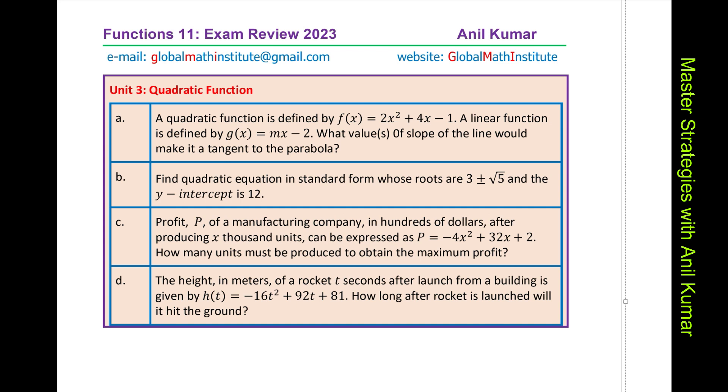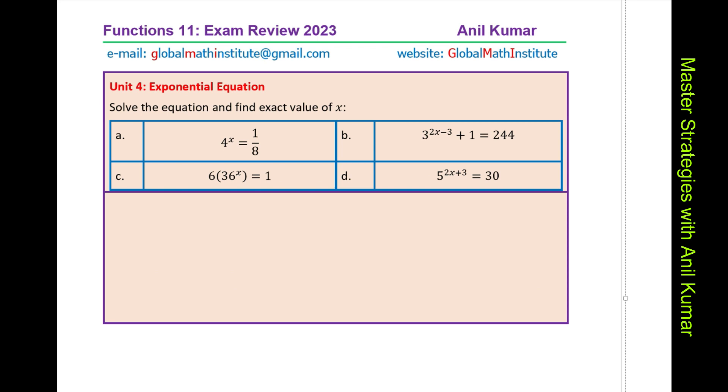Part b. Find the quadratic equation in standard form, whose roots are 3 plus minus square root 5, and the y-intercept is 12. There are many ways to do it. I will discuss with you one of the best ways to do. Remember, product and sum for standard equation. That is the method you should be applying. Question number c part and the d part are the application questions, where the application is given to you. Simple working with the quadratic equation, that should not be critical. However, you should understand the units and interpret them properly in your answer. So, that could be a catch.